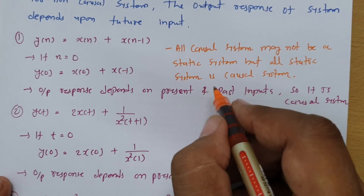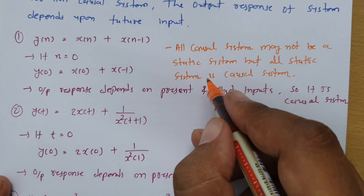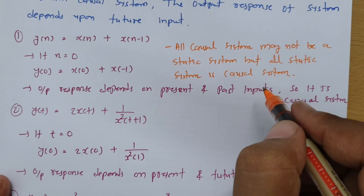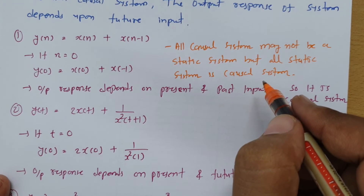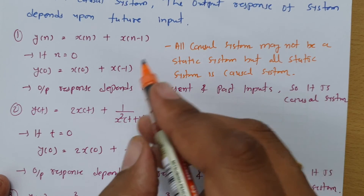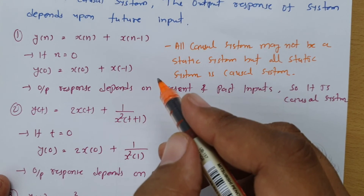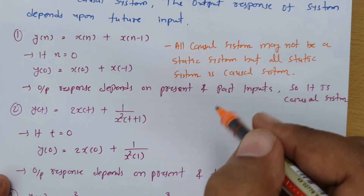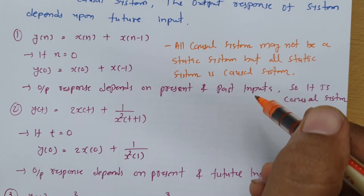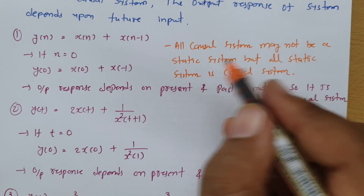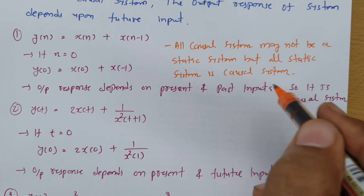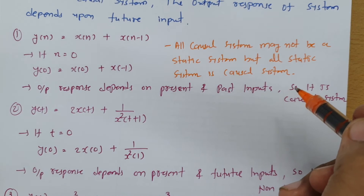The reason is: for a static system, the output depends on present input only, so it will always be a causal system. But for a causal system, the output depends on present and past inputs, so all causal systems may not be static — but all static systems are always causal.